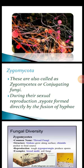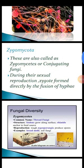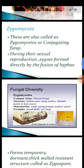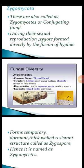There is fungal diversity — Zygomycetes' common name is thread fungi because they look like threads. Their structure includes long stolons that grow along the surface, and they also grow on spoiled food like bread.